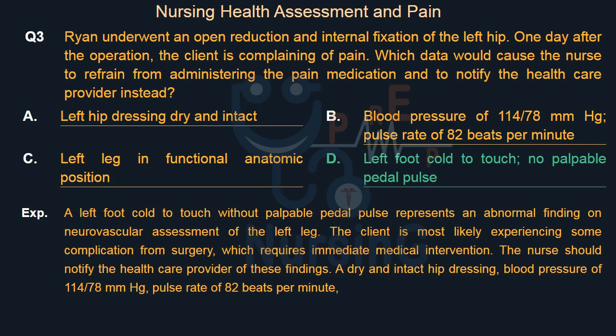A left foot cold to touch without palpable pedal pulse represents an abnormal finding on neurovascular assessment of the left leg. The client is most likely experiencing some complication from surgery, which requires immediate medical intervention. The nurse should notify the healthcare provider of these findings. A dry and intact hip dressing, blood pressure of 114/78 mmHg, and pulse rate of 82 beats per minute are all normal findings.